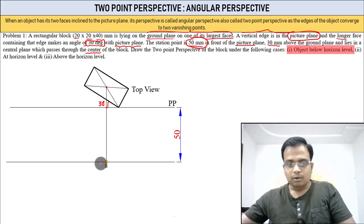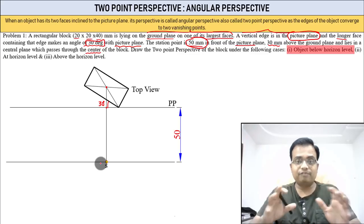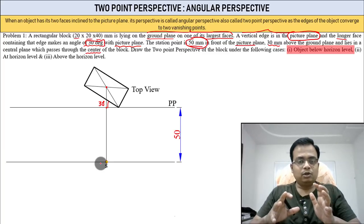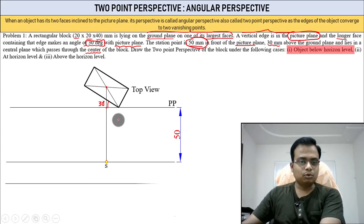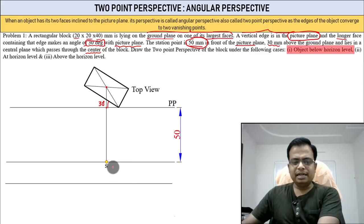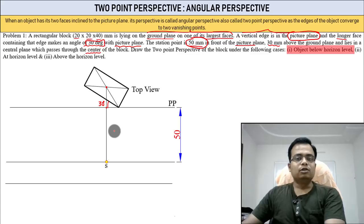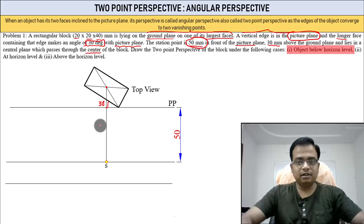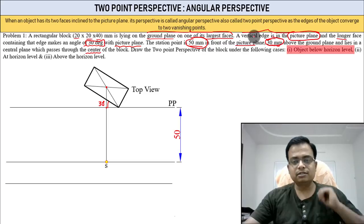The station point is located 50 millimeters away from the picture plane. Once you've located it, everything becomes easier. The tough aspect of perspective projection is locating everything and positioning the object appropriately. Now in the front view, your eyesight is at a certain height from the HP.